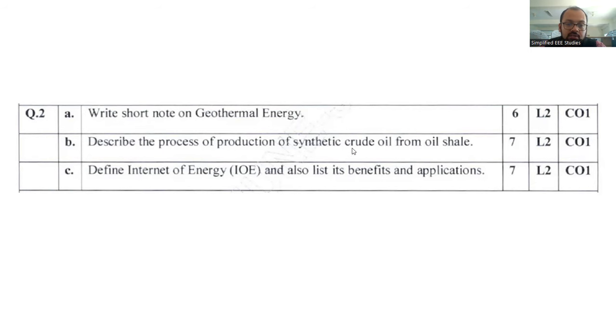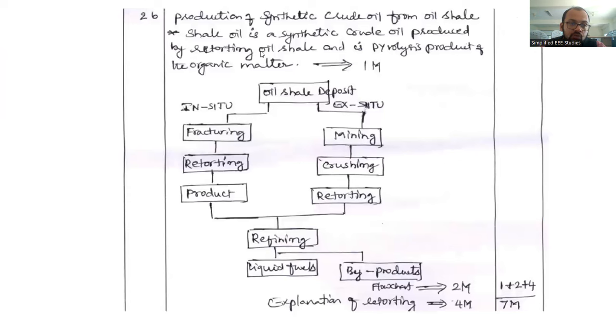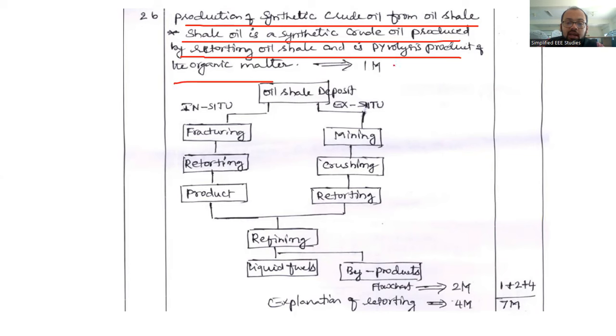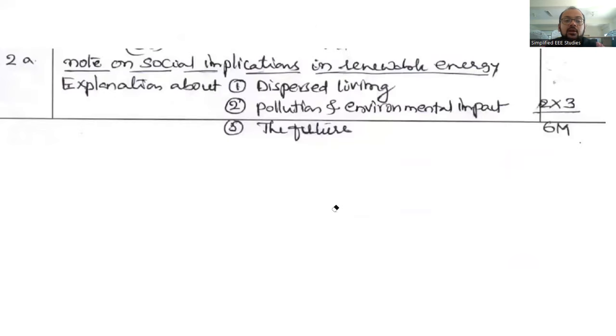Describe the process of production of synthetic crude oil from the oil shale. You are supposed to explain the process using the block diagram. Oil shale synthetic crude oil is produced from restoring oil shale in the pyrolysis process of organic matter. Pyrolysis process you are supposed to underline, weightage is one mark. The process includes fracturing, restoring, product mining, crushing, restoring, finally refining, then liquid fuel will be extracted. You are extracting the byproduct also. You need to elaborate with the help of this block diagram, so you can get full weightage. Sketch is three marks, write up is three marks.